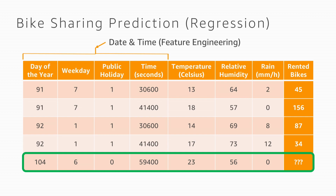Before going to the algorithm, we should think about feature engineering — thinking about the features through the eyes of the machine and expanding the information. From a single date I can extract whether it's a Sunday or Monday, and also whether it's a public holiday. For example, Easter Monday is quite different from a traditional Monday, so the algorithm needs to learn that.